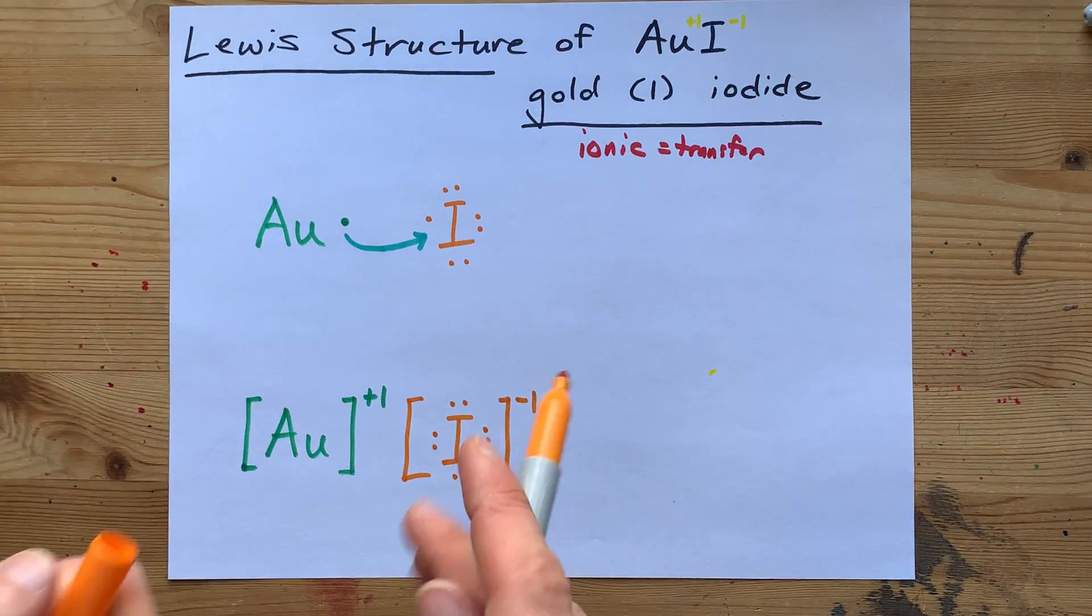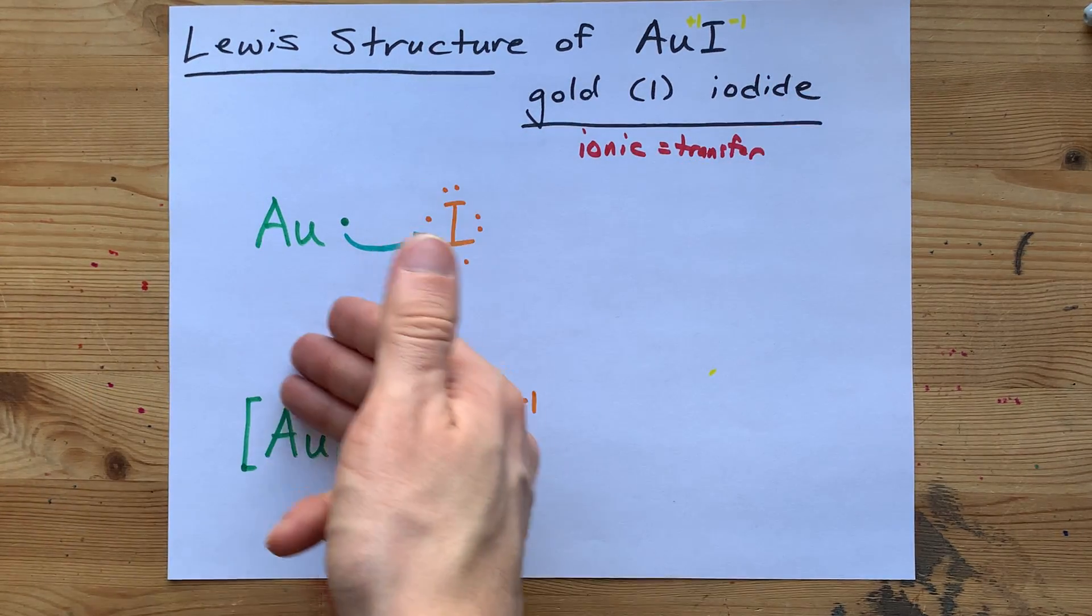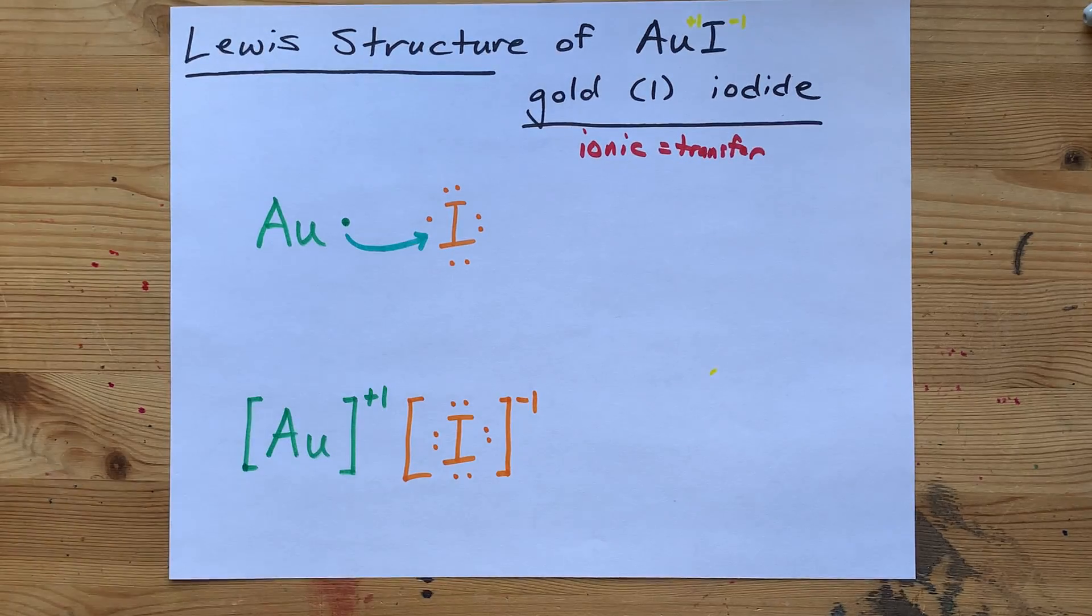This is your complete Lewis diagram for gold 1 iodide. You're welcome. Best of luck.